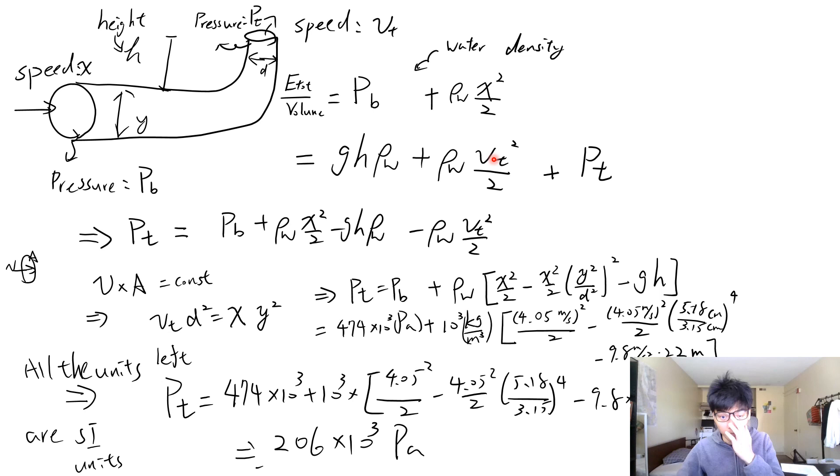And this will be equal to the gravitational potential energy per volume plus the same, the only thing that has changed is the speed here is the speed at the top. And so actually it's the height which is the distance, the height of the building.